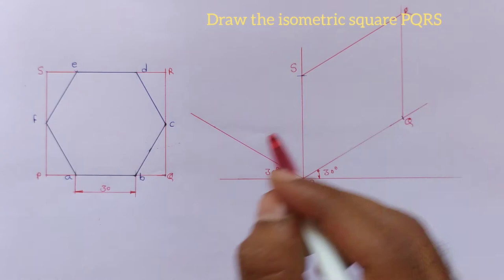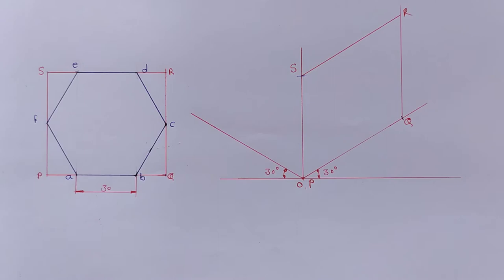Now the hexagonal points A, B, C, D, E, F. We should mark on this isometric square.